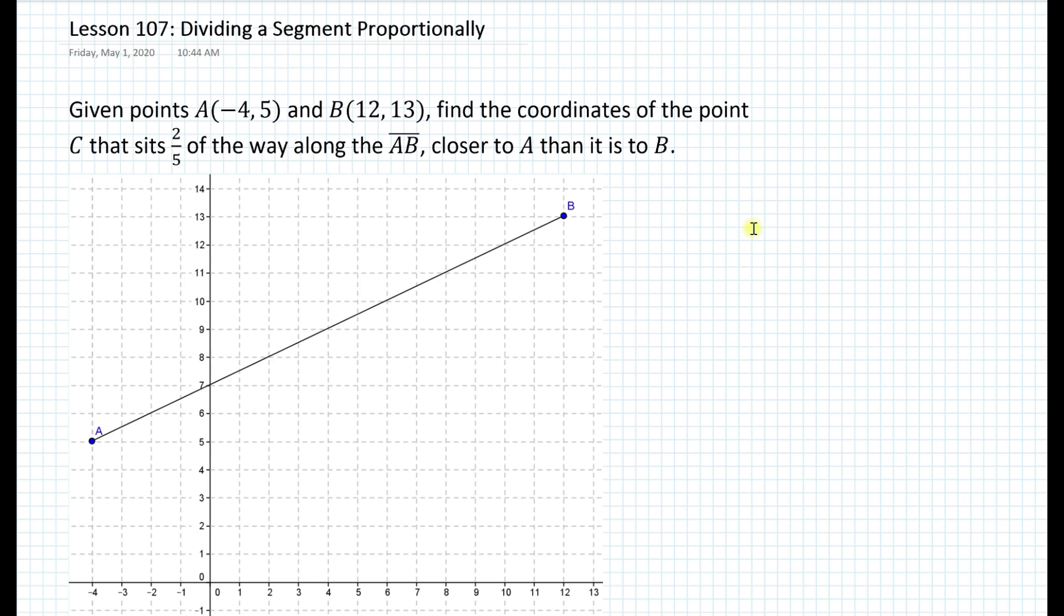So let's imagine that point C is probably somewhere here, that is 2 fifths of the way. So maybe it's here somewhere. Let's imagine this. What does it mean, 2 fifths?